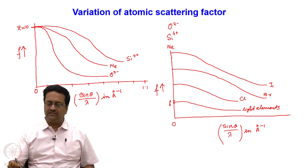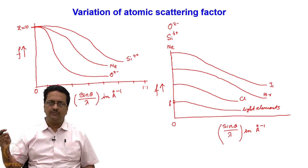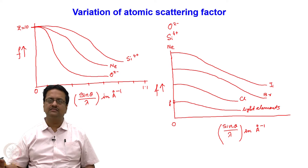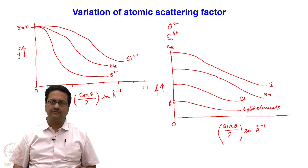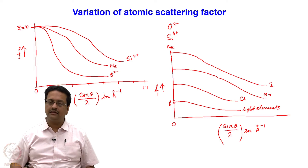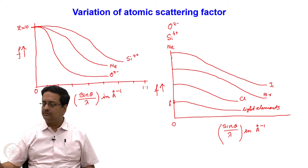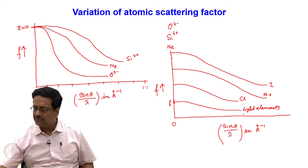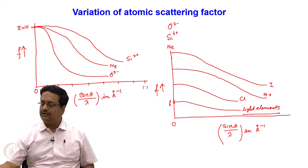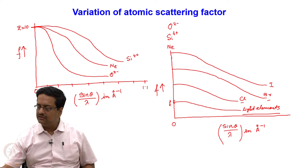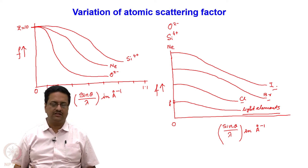With sin theta by lambda, the scattering power of every element reduces very significantly. As a result, at a higher angle we do not get very strong diffraction from most crystals. We also indicated that for light elements the scattering power is very less, and the heavier the element, the stronger and stronger the diffraction capability from those elements.